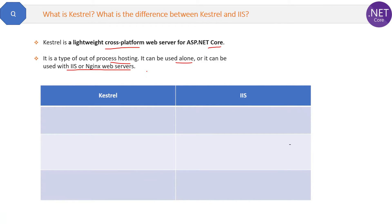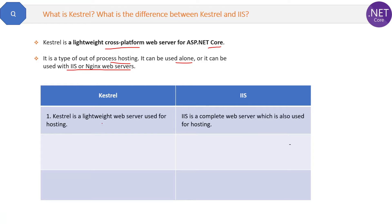Now let's see the differences between Kestrel and IIS. The first difference is Kestrel is a lightweight web server — lightweight meaning it will not use more memory in comparison to IIS. Whereas IIS is a complete web server, which is also used for hosting. There are a lot of configurations possible in IIS that are not possible in Kestrel, making IIS more complex but providing many more functionalities.